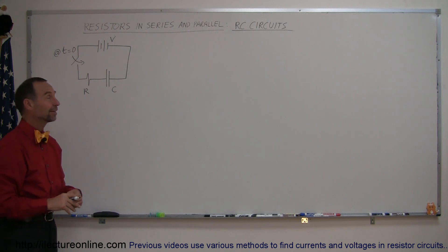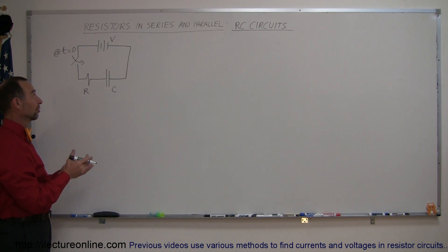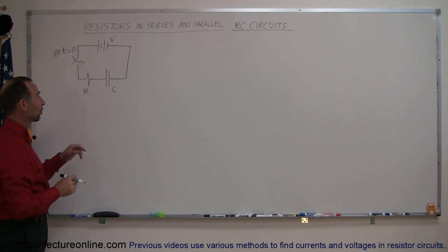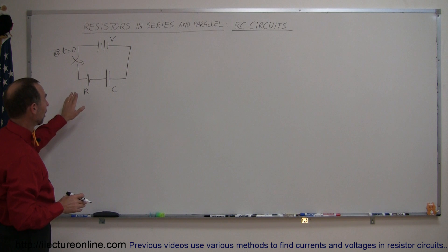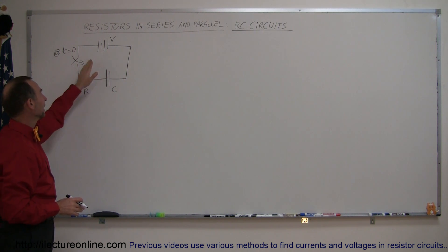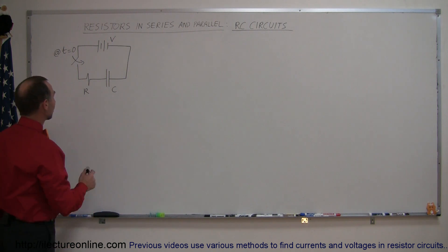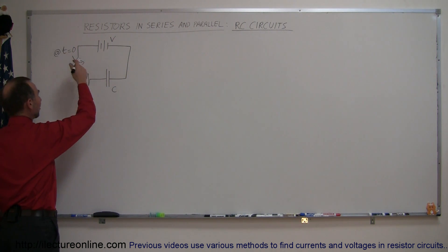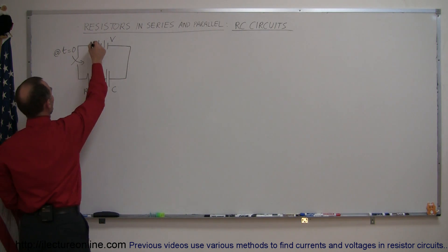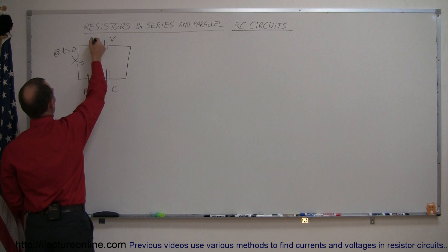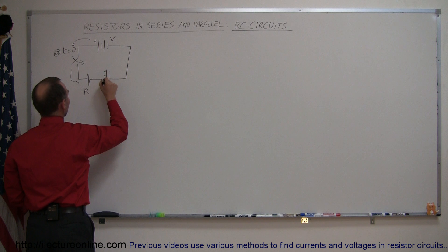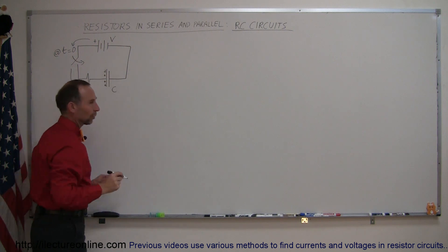Welcome to iLecture Online. Here's a different kind of topic dealing with resistors in series and parallel. In addition to just resistors, we also have a capacitor, so these are called RC circuits — resistor and capacitor circuits. We still have our battery, but we also added a switch. When we close the switch and start the clock, the charges in the battery will flow through the circuit, through the resistor, onto the capacitor, and begin to charge the capacitor over time.